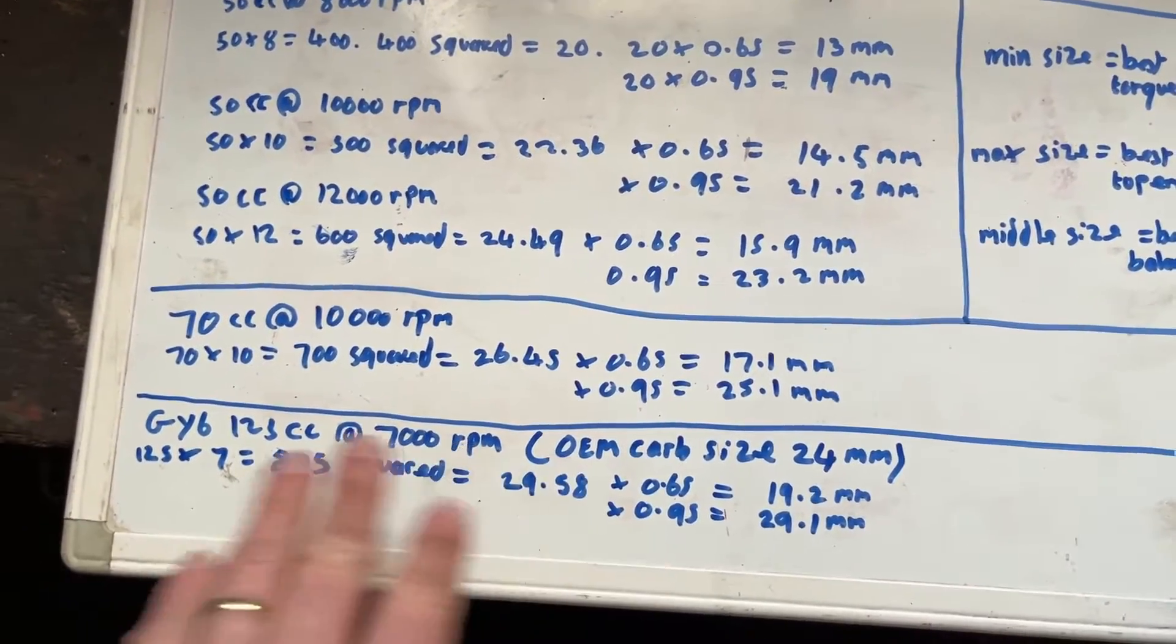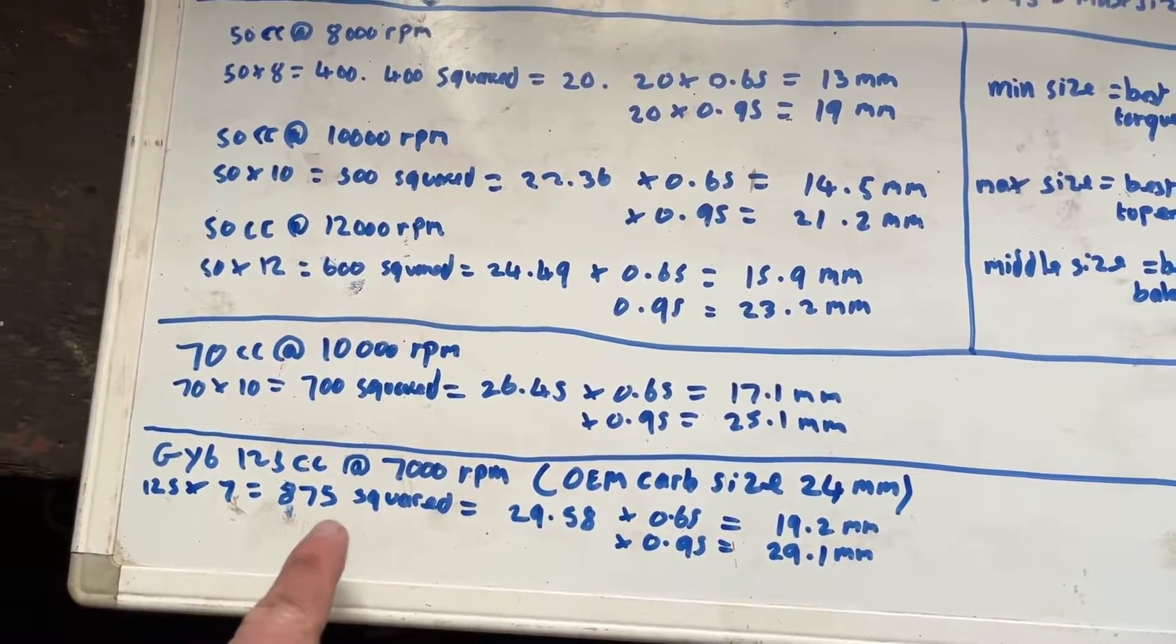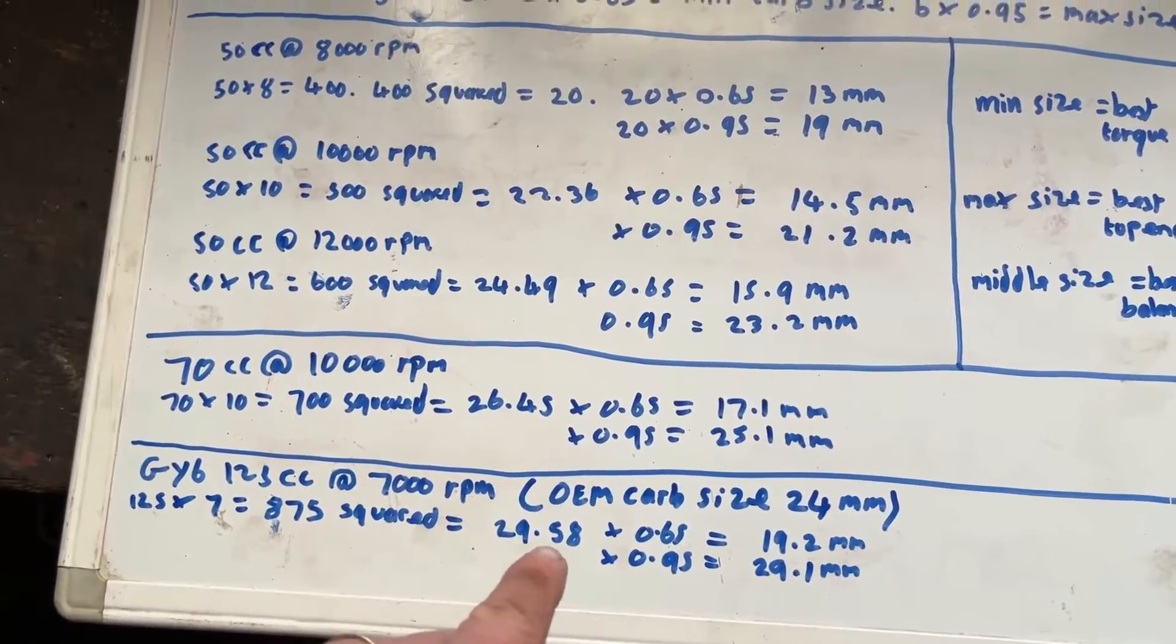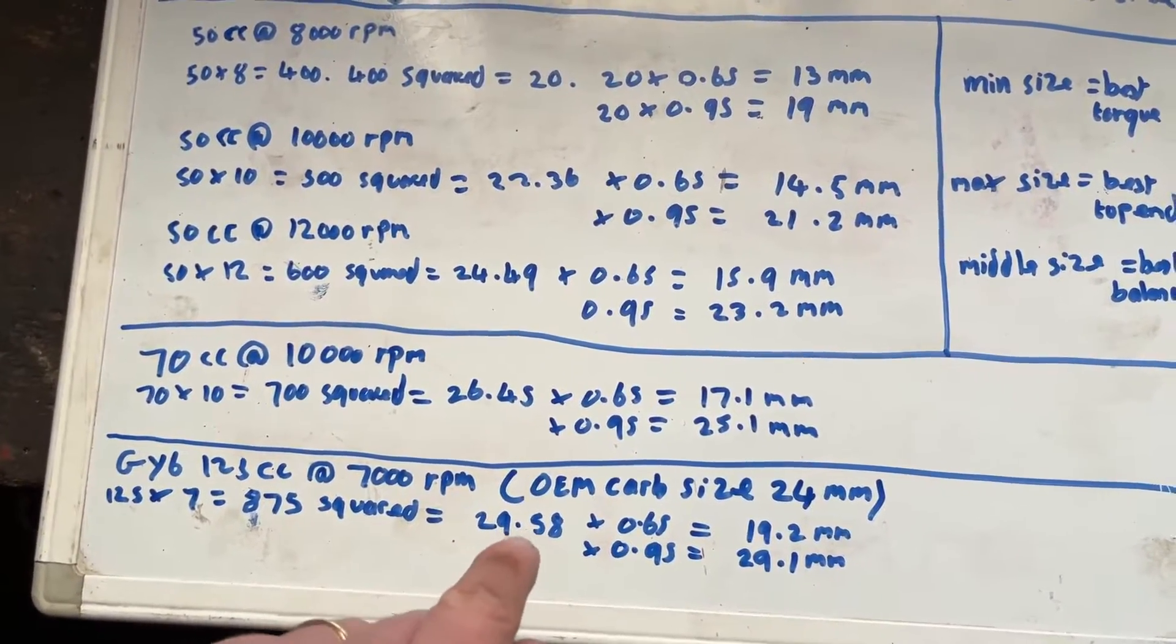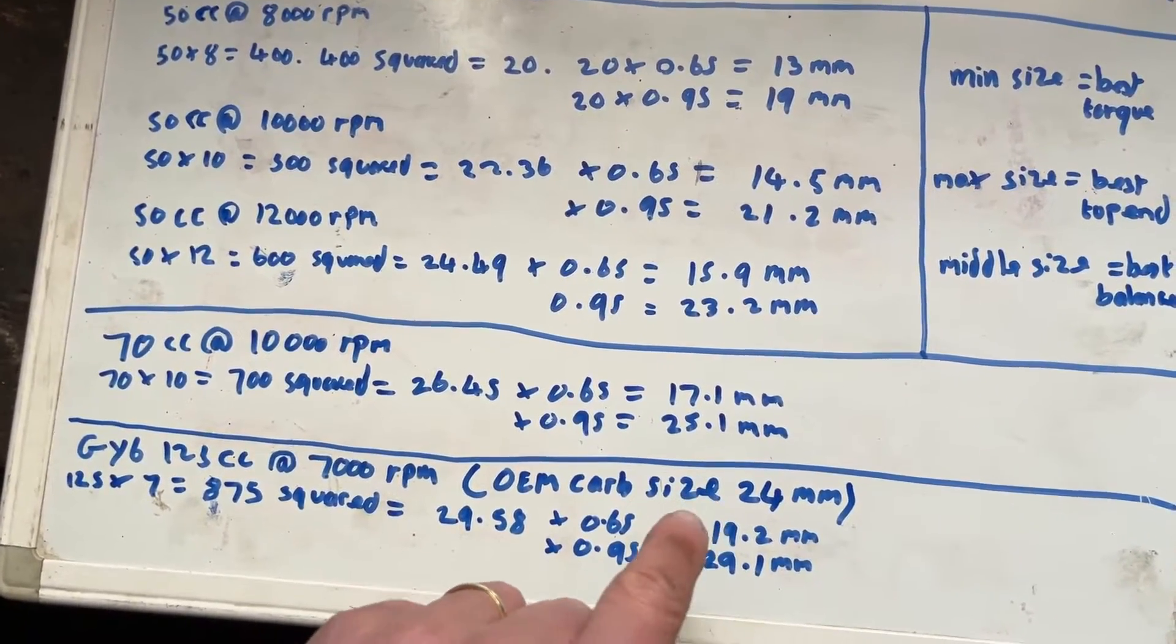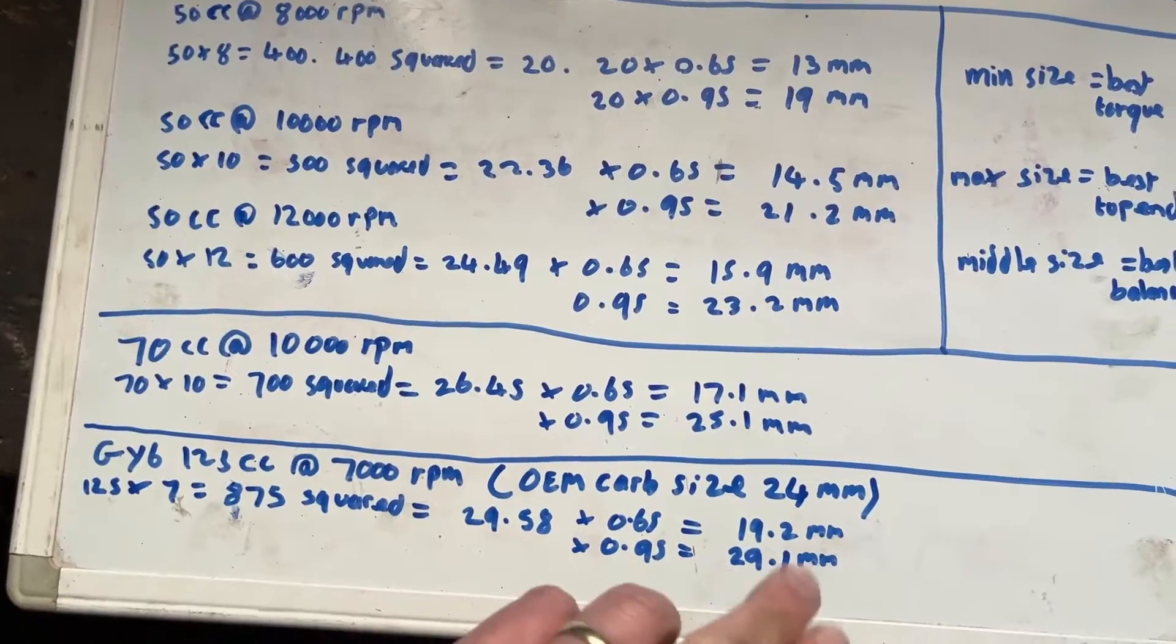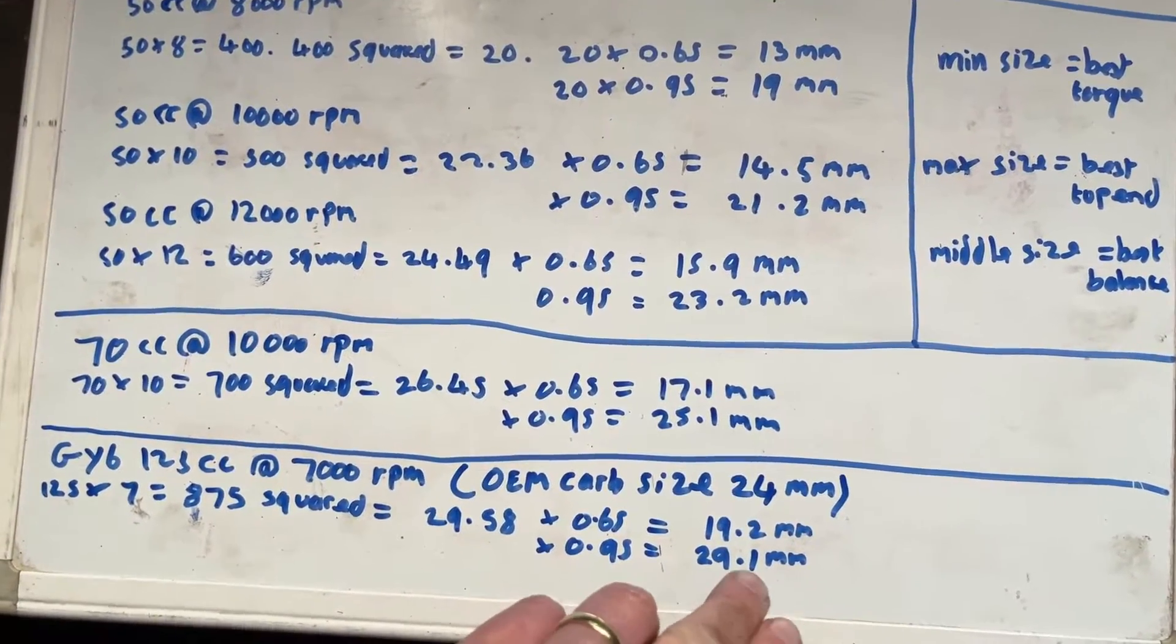So let's do our calculation. We've got 125cc times 7, 7,000 RPM, gives us 875. Square root of that gives us 29.58. If we times that by 0.65, we get a minimum carb size of 19.2 and a maximum carb size of 29.1.